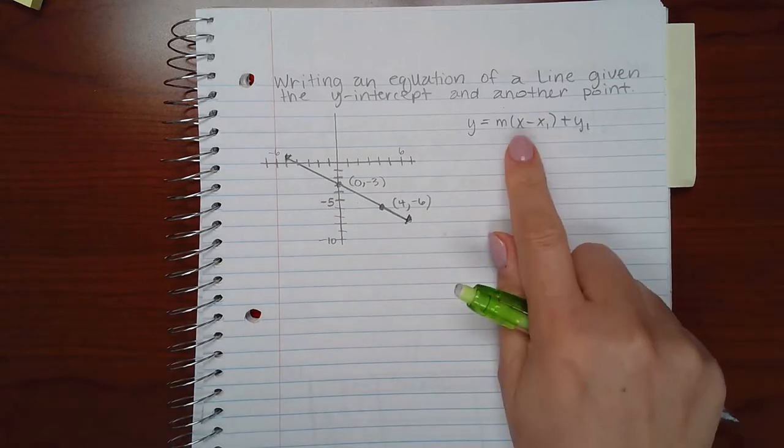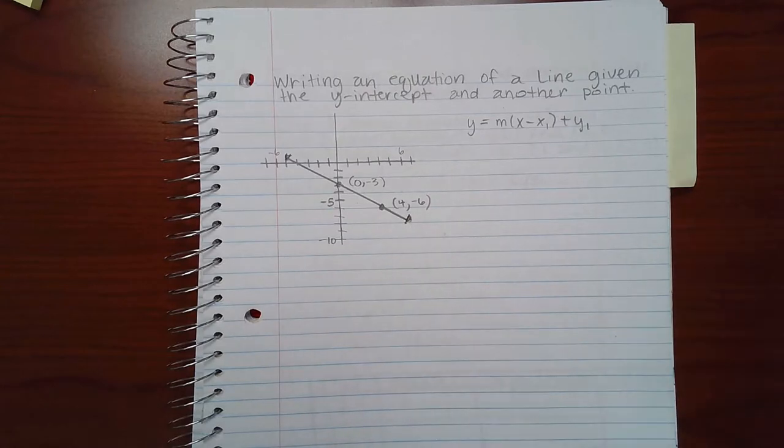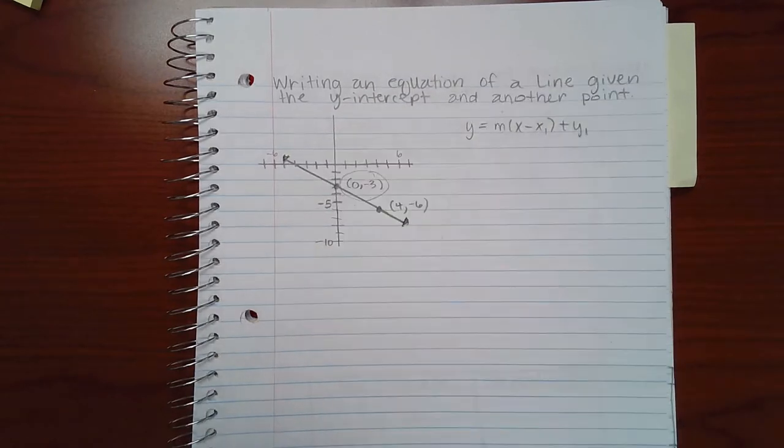I do have the coordinates of a point. I could use this point or I could use this point. It doesn't matter. I'm going to choose to use the y-intercept point, 0, negative 3.